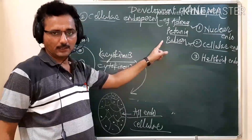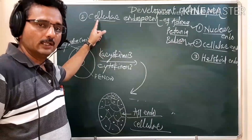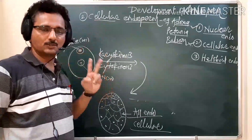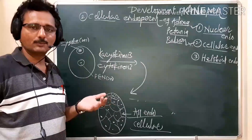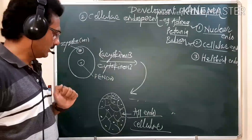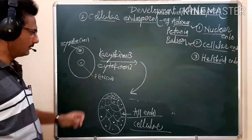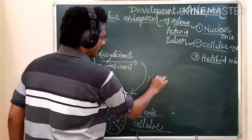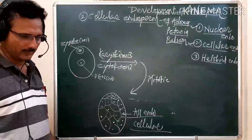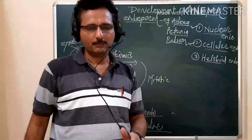In cellular endosperm, all divisions are mitotic. Right from the primary endosperm nucleus, karyokinesis is immediately followed by cytokinesis, forming cellular endosperm throughout development. This contrasts with nuclear endosperm where free nuclear division occurs first. Students should understand that in Adoxa, Balsam, and Petunia, the endosperm is cellular right from the beginning.